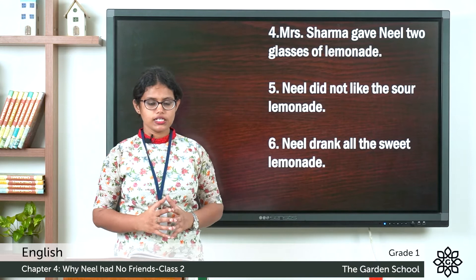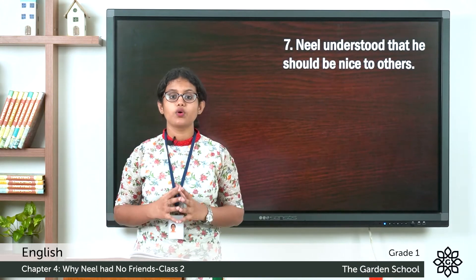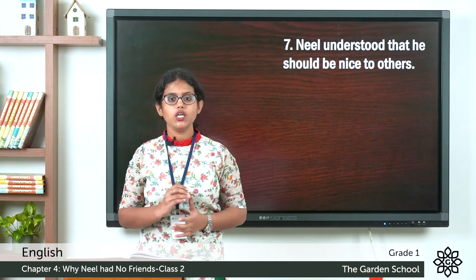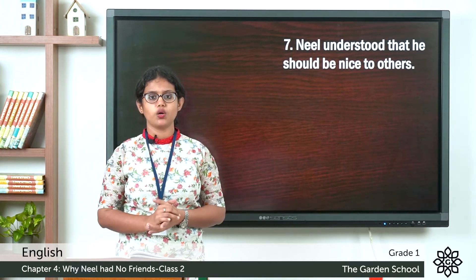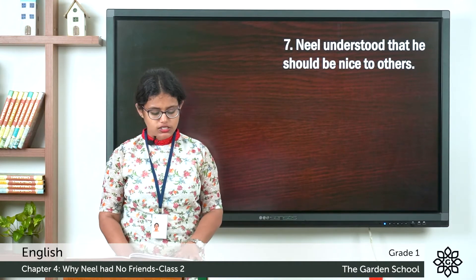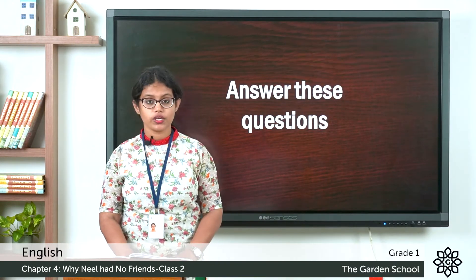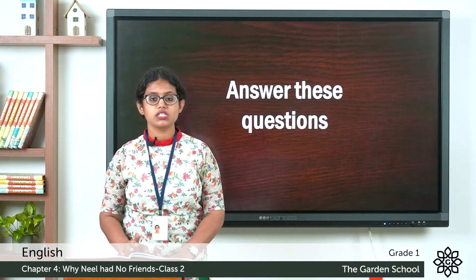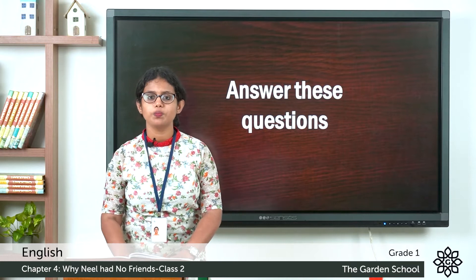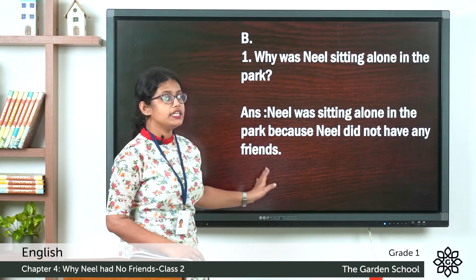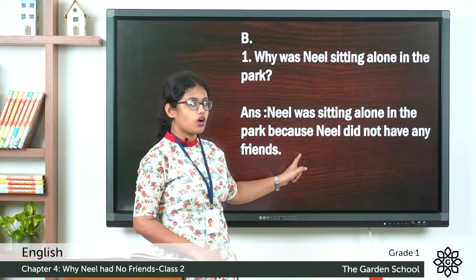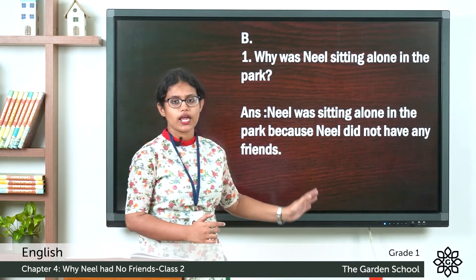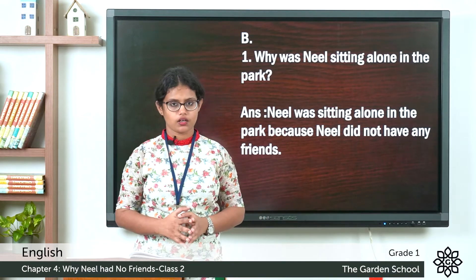Coming to the next exercise — answer the following questions. There are four questions and we will discuss the answers, then you have to write them in your notebook with today's date. Let's start with the first question: why was Neil sitting alone in the park? The answer is Neil was sitting alone in the park because he did not have any friends. He had no friends, that is why he was sitting alone.